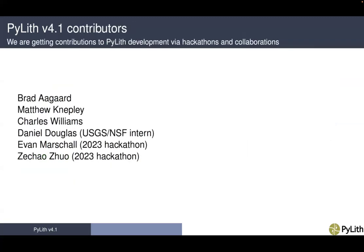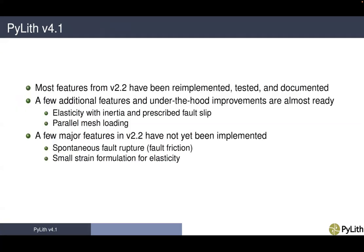For version 4.1, contributors include the primary developers as well as Daniel Douglas, who is a USGS NSF intern, Evan Marskal, and Zhezhao Zhu from the 2023 hackathon who contributed examples. In PyLith version 4.1, most features from version 2.2 have been re-implemented, tested, and documented. There are a few additional features and under-the-hood improvements that are almost ready, including elasticity with inertia and prescribed fault slip for dynamic problems, as well as parallel mesh loading. A few major features in version 2.2 that have not yet been implemented are spontaneous fault rupture (fault friction) and the small strain formulation for elasticity.